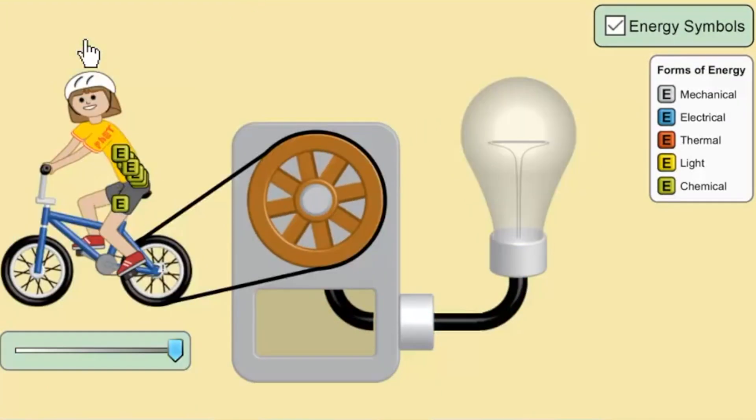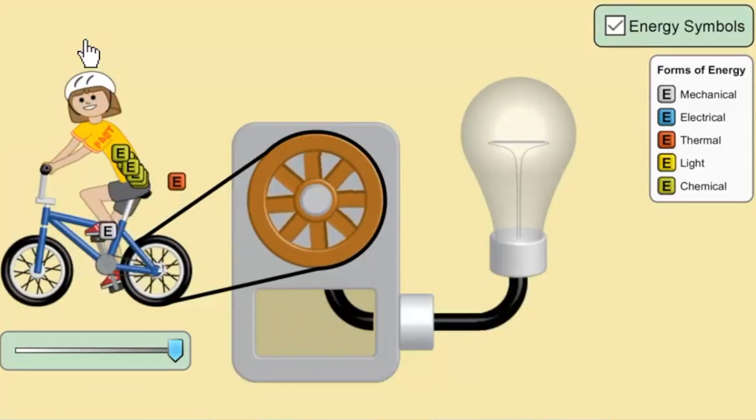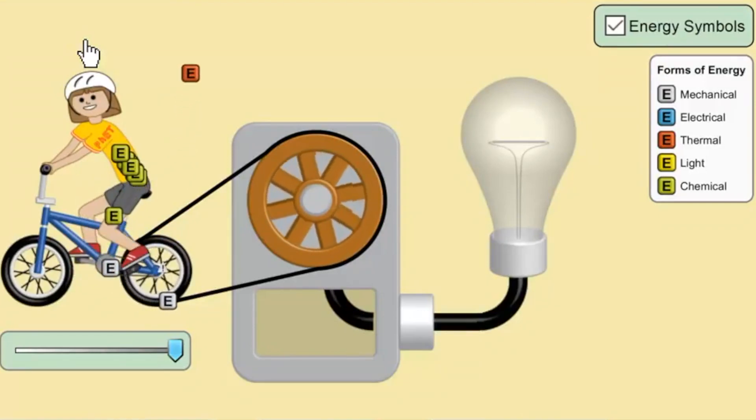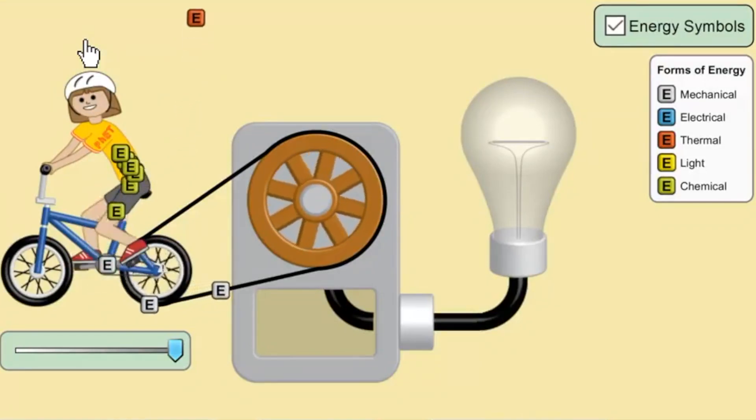Okay, if we take a look at our biker here, you can see that she has green E's inside of her, chemical energy. That would be energy that has been stored from food. As she begins pedaling, that pedaling means that that chemical energy is being converted into mechanical energy. The turning wheel moves a pulley, which is also mechanical energy.